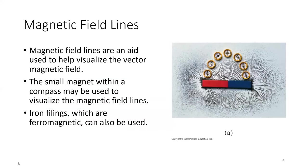Magnetic field lines are a way to help us visualize the vector magnetic field in the same way that drawing an electric field line was a way for us to visualize the electric field. We can use the small magnet that's within a compass to visualize these magnetic field lines, or we can use iron filings, which are ferromagnetic materials. You'll see on the image to the right there's a bunch of small compasses, and you can see those compass needles are aligning themselves in that arc that shows us the magnetic field lines from the north to the south end of this bar magnet.